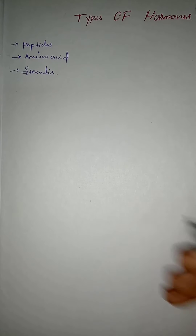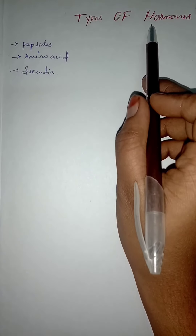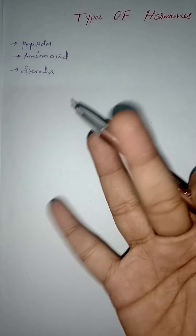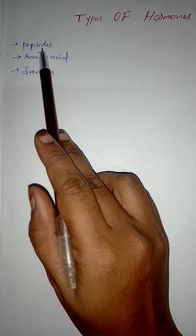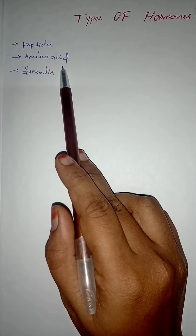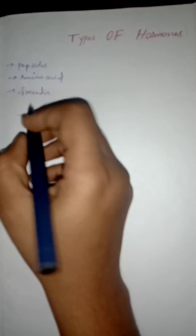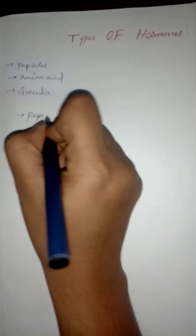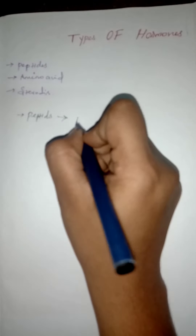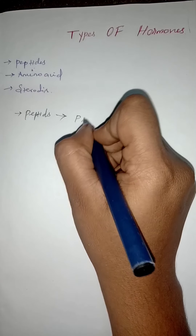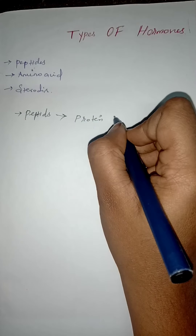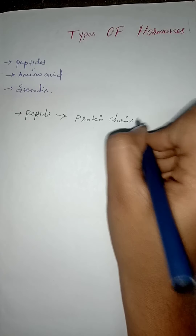Welcome to Medical Concept. Today we are going to see about types of hormones — three types of hormones in our body: peptide hormones, amino acid hormones, and steroid hormones. Now we are going to see about them one by one. First, we are going to look at peptide hormones. These are all derived from protein chains, so they contain a peptide bond.